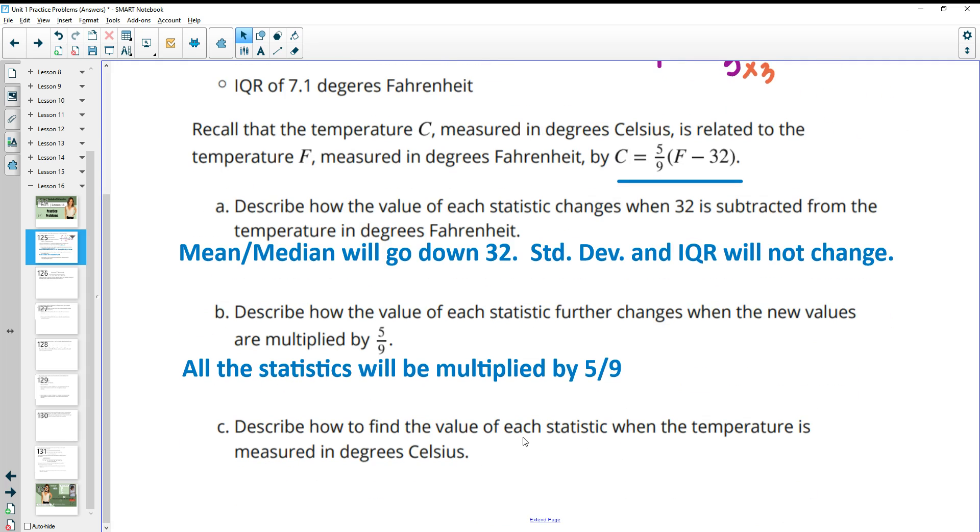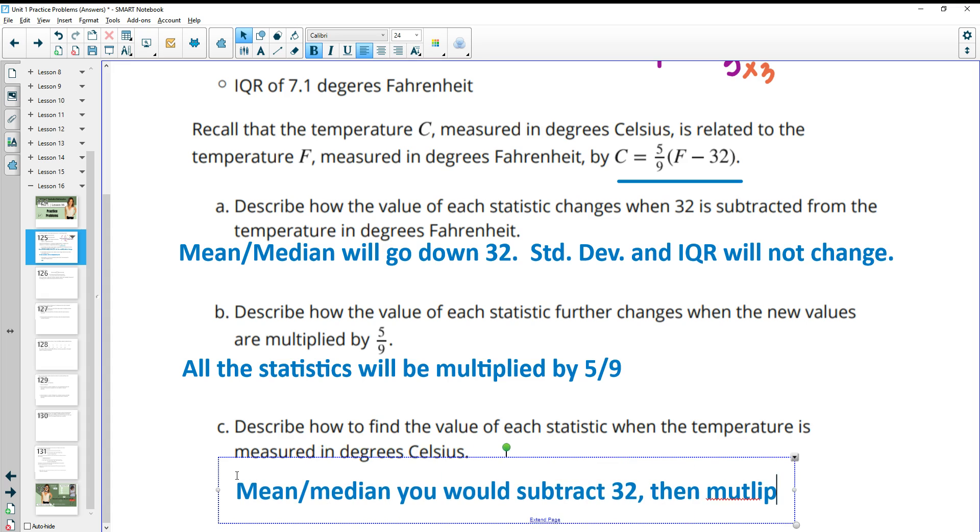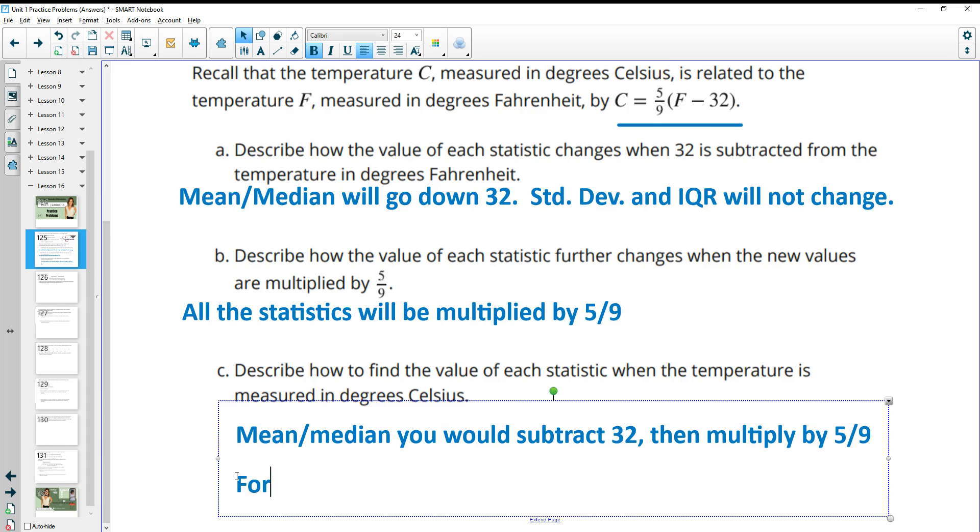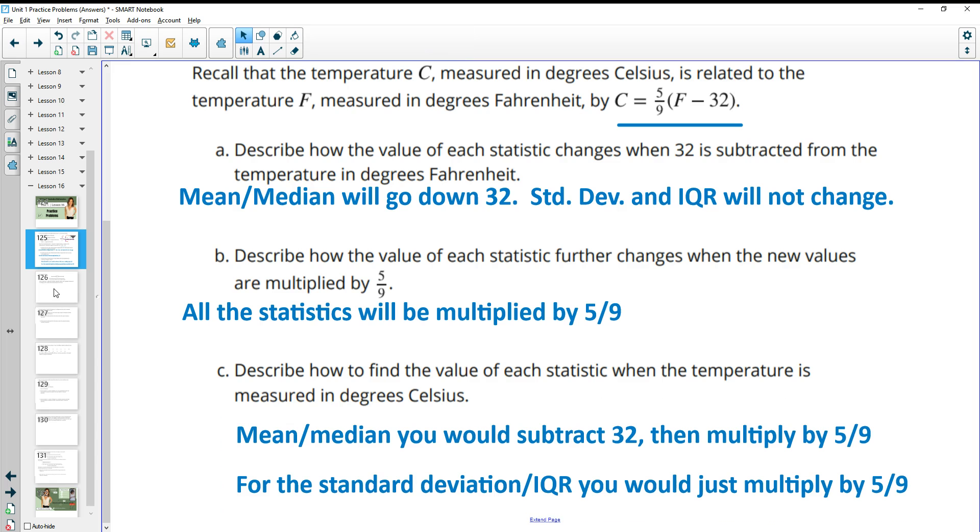Then it says, describe how to find the values of each statistic when the temperature is measured in Celsius. So for the mean and median, you would subtract 32 first, then multiply by 5 9ths. For the standard deviation and the IQR, you would just multiply by 5 9ths, since they remain unchanged from the minus 32, so just needing to multiply by the 5 9ths.